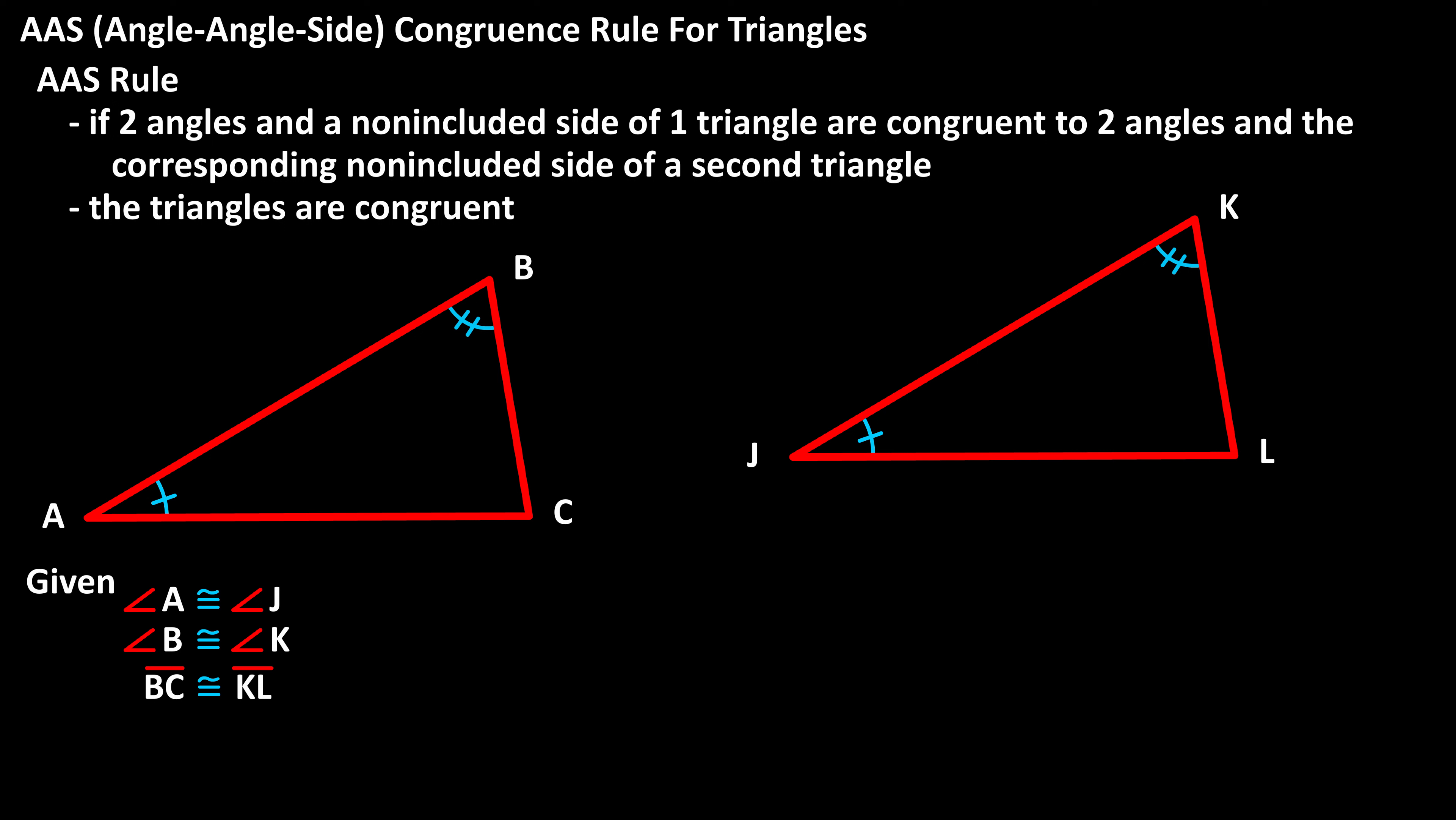And an arc with two tick marks for angles B and K to show this visually. We can also put in a single tick mark on segments BC and KL to show their congruence. In this example, segment BC and segment KL are corresponding non-included sides, because they are adjacent to corresponding angles, angle B and angle K.